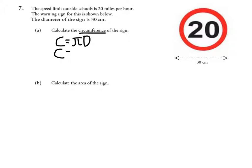We then put our numbers in, so pi is 3.14 and the diameter is 30. We then put that into my calculator and we get the answer to be 94.2 centimeters.